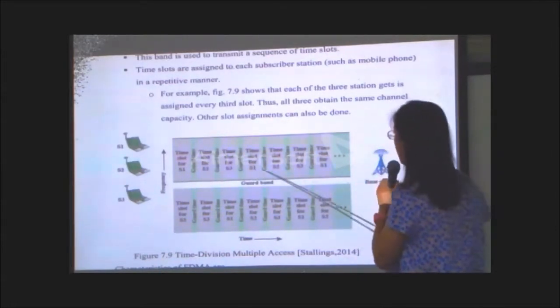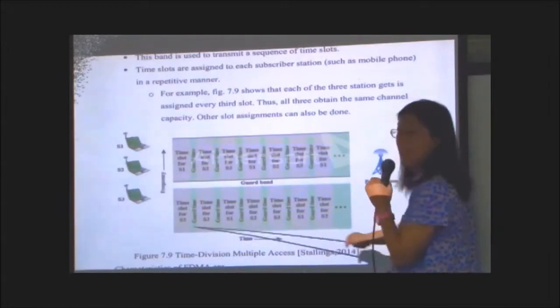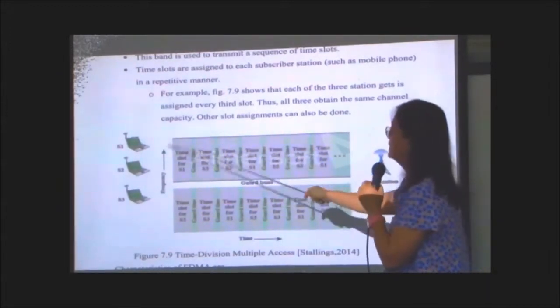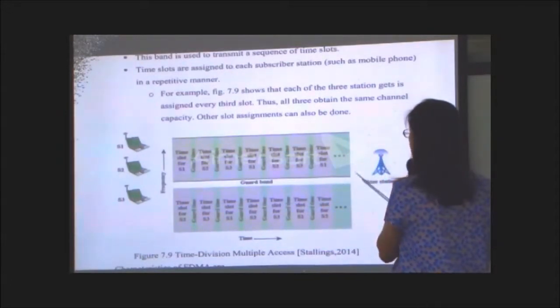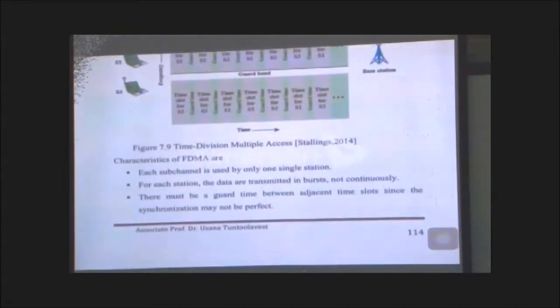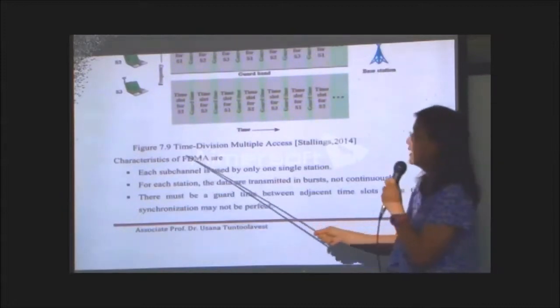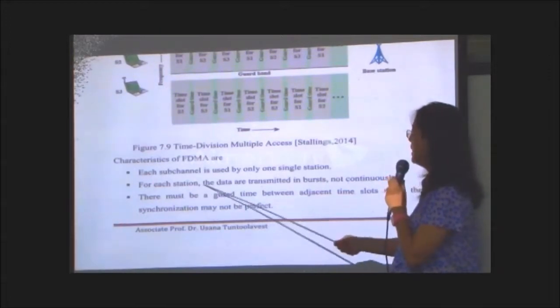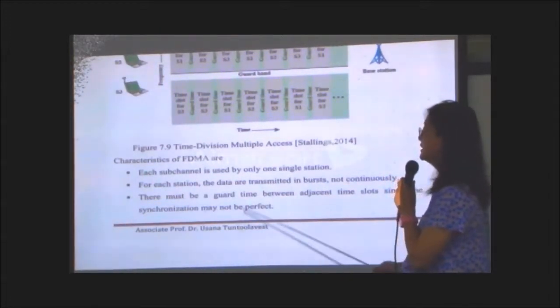So this is the one for uplink and one for dial link. Uplink is the subscriber sending to the base station, dial link is base station sends to the subscriber. Again, I already corrected it in the max alert. Characteristic of the TDMA: each other is used by only one single station, so the same thing.